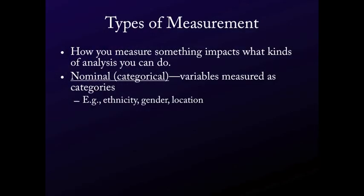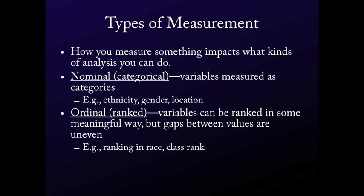The first type is nominal variables. The word nominal means 'name' — these are variables measured as categories: ethnicity, gender, location, yes/no responses. The next level up is ordinal variables, which are ranked variables that can be ranked in some meaningful way. But what differentiates ordinal from the next types is that the gaps between the values are uneven. Imagine a race where first finishes in two hours, second in two hours ten minutes, and third in two hours, ten minutes, and two seconds. An ordinal variable would just tell you first, second, third — even though second and third are almost the same while first is very different.